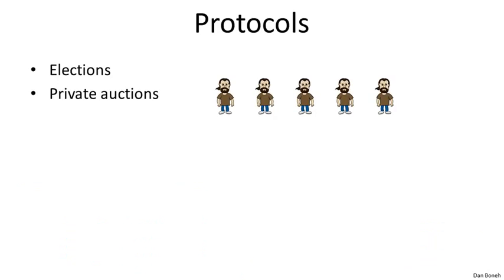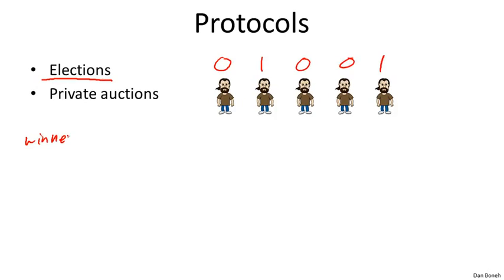Another application of cryptography involves more abstract protocols. The first example is election systems. Suppose we have two parties — party zero and party one — and voters vote for these parties. In this election, party zero might get three votes and party one gets two votes, so the winner is party zero. More generally, the winner is the party who receives the majority of the votes. The voting problem is: how do voters compute the majority while revealing nothing else about their individual votes?